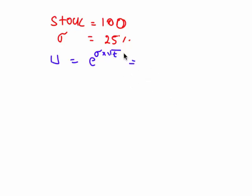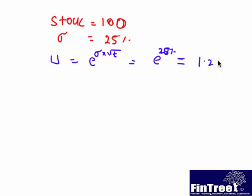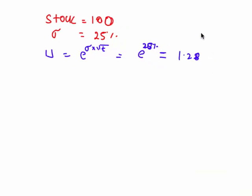So in our example, T is just one year, assuming it's a one period, one year tree. So e raise to 25%, so it would be 1.28. That's it, so 1.28.